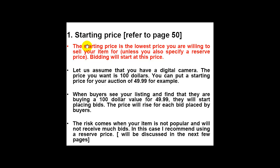The starting price is the lowest price you are willing to sell your item for, and bidding will start at this price. Let's assume you are selling a digital camera on eBay and the price you want for this camera is $100. You can put a starting price for your auction of $49.99. When bidders see your listing and find that they are buying a $100 value for $49.99, they will start placing bids and the price will rise.